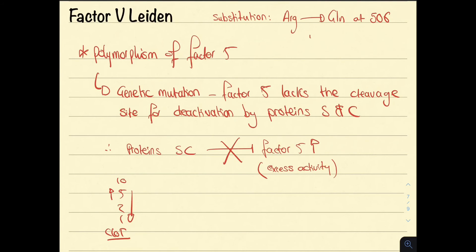Factor V Leiden is a substitution mutation, where arginine at position 506 is replaced with glutamine. Importantly, this is also the most common inheritable cause of hypercoagulability in Caucasians.